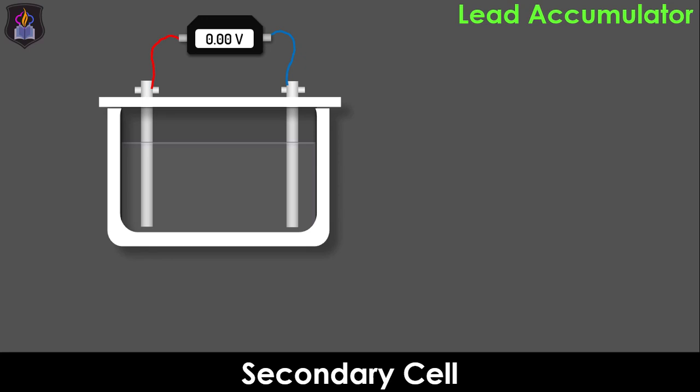Let's study the lead accumulator as a secondary cell. In this cell, the anode is a lead metal. The cathode is lead 4 oxide and the electrolyte is dilute sulfuric acid solution. Being a secondary cell, the lead accumulator undergoes two processes, discharging and recharging. The cell discharges when it is producing electricity.